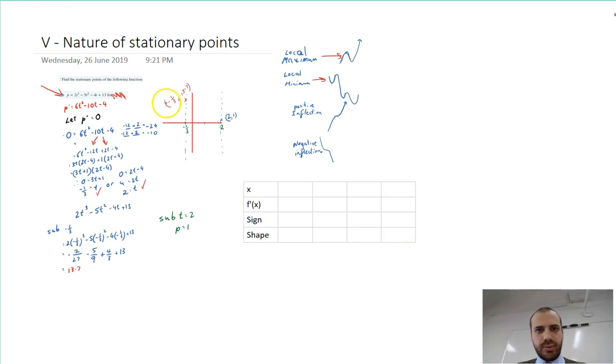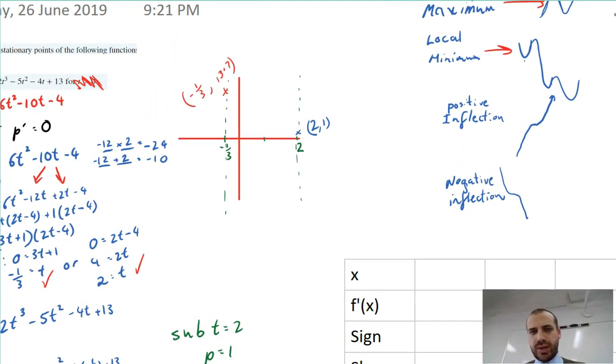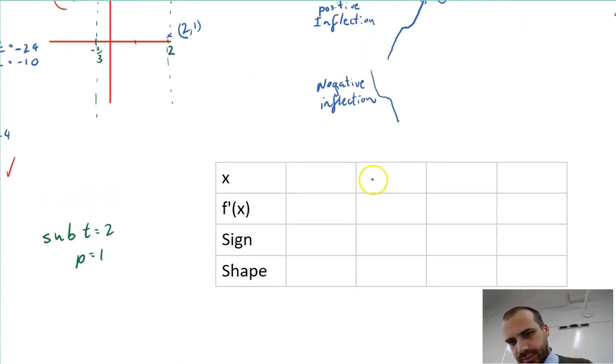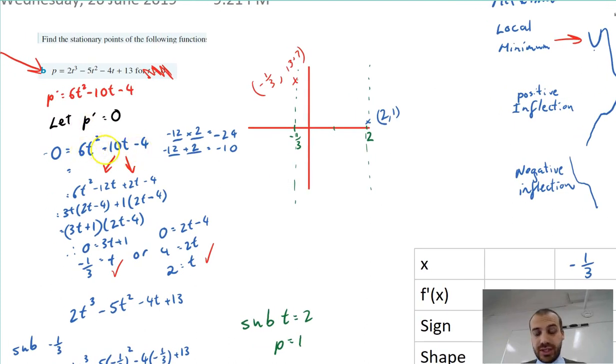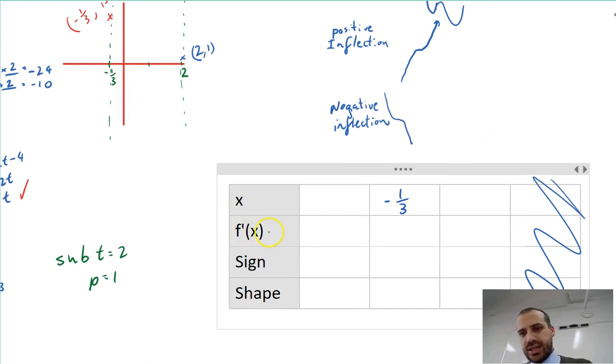My turning point, what I'm going to do is test this turning point, negative one third. I know that if I sub negative one third into the derivative function for t, my answer's going to be zero. How do I know that? Because when we let p dash equal zero, we got negative a third. When x equals negative a third, f dash x equals zero.